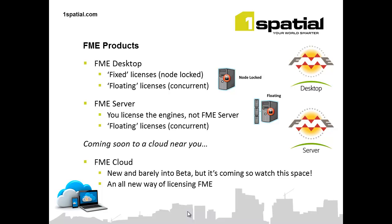The main products that are available are FME Desktop and FME Server. FME Desktop is available to be licensed with a fixed license model — sometimes referred to as Node Locked. There's also something called a floating license, also available for FME Desktop. Occasionally that's referred to as a concurrent license, because it means that more than one individual can use FME at any one time, so those licenses are concurrent.